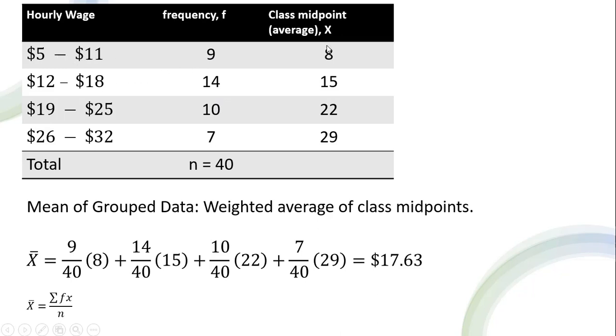And this last column here is the class midpoint or average. What's the midpoint between $5 and $11? It's just $8. That falls right in the middle. Or another way to do it is just add these two numbers up and divide by 2 to get a simple average. So 5 plus 11 is 16, dividing by 2 is 8.